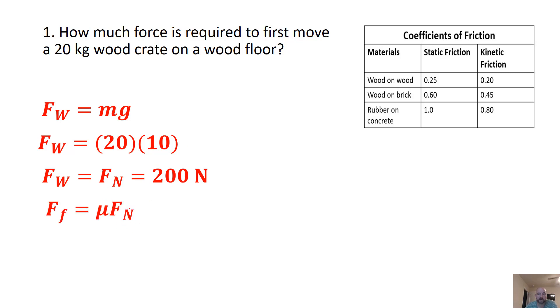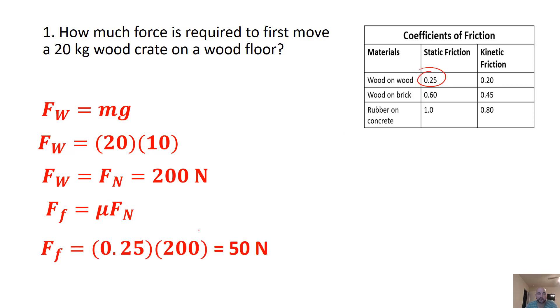Now we're going to use the coefficient of friction of the wood block first moving, so there's a 0.25, and when we solve for this, we get a force of friction of 50 newtons.